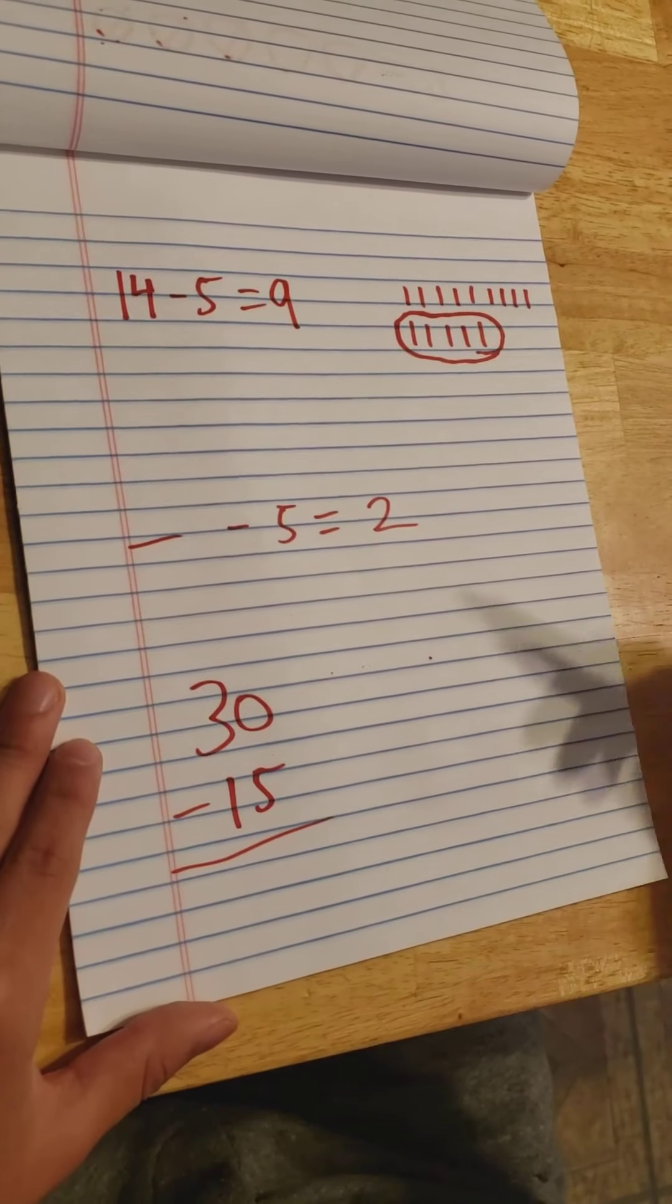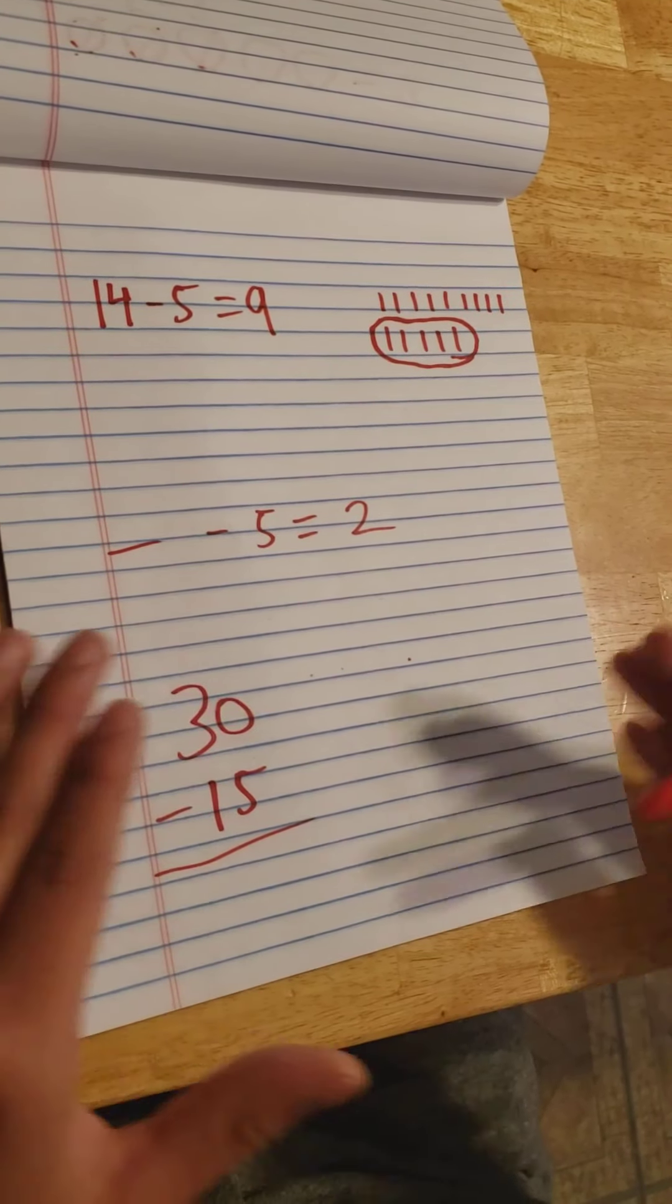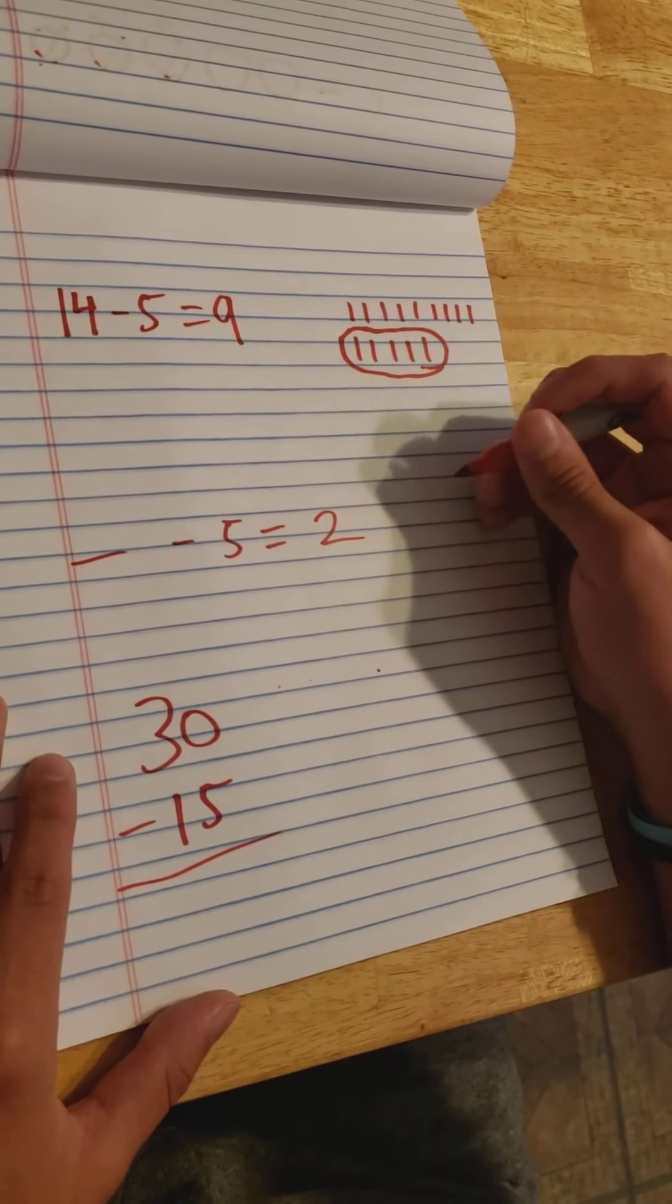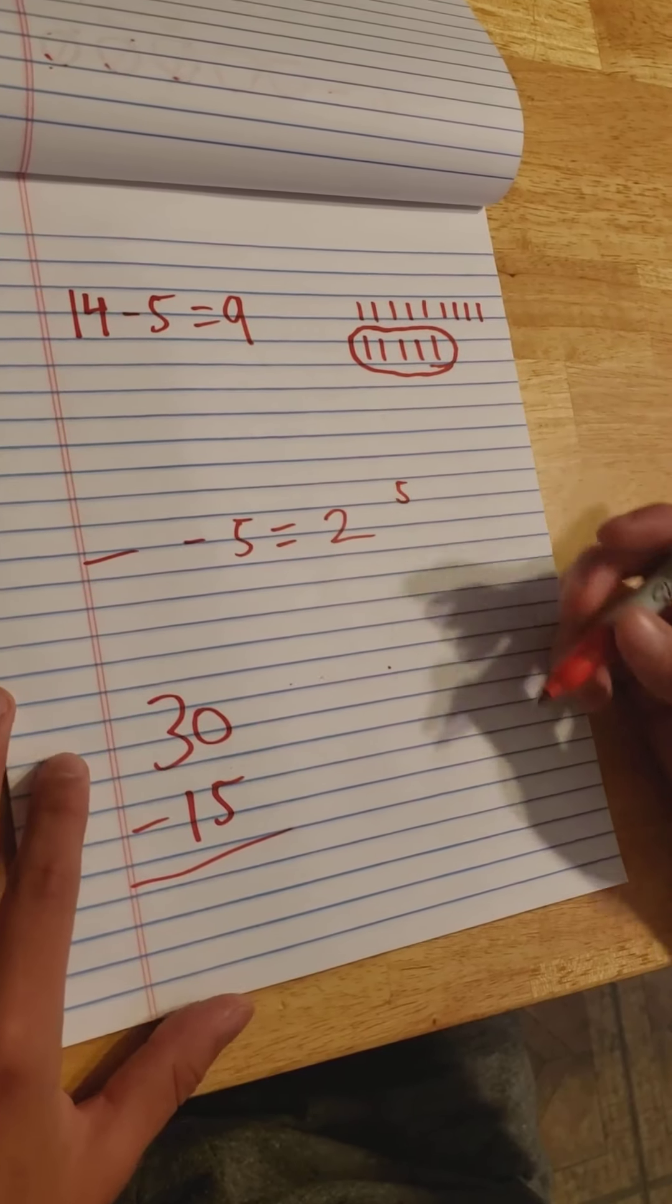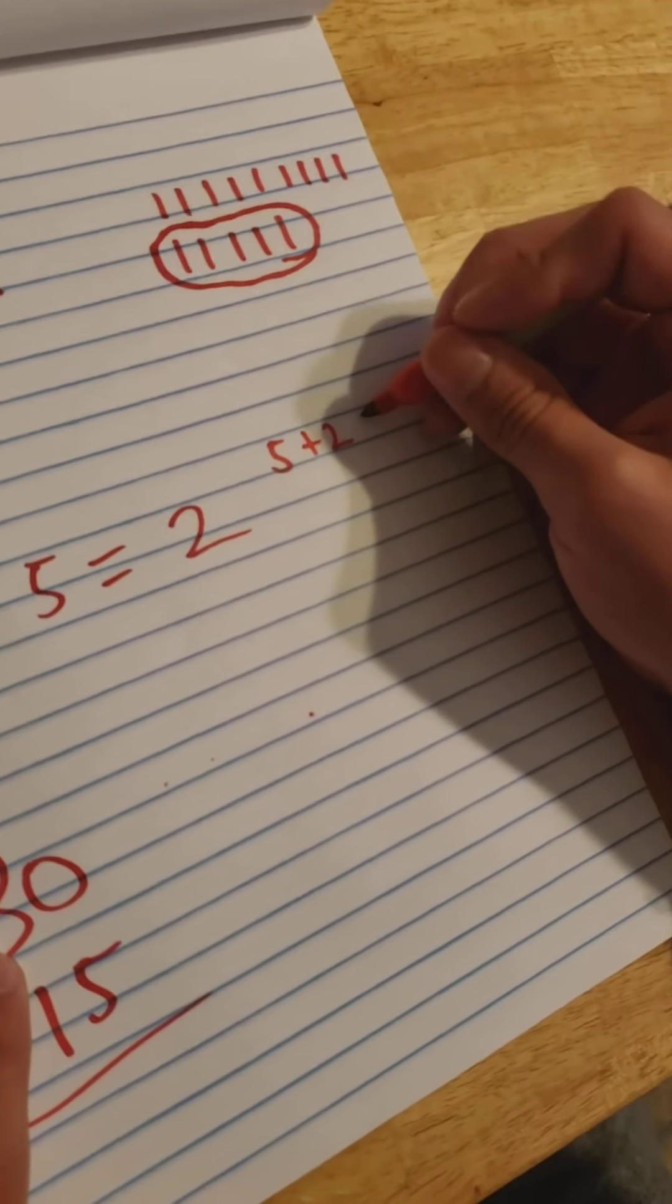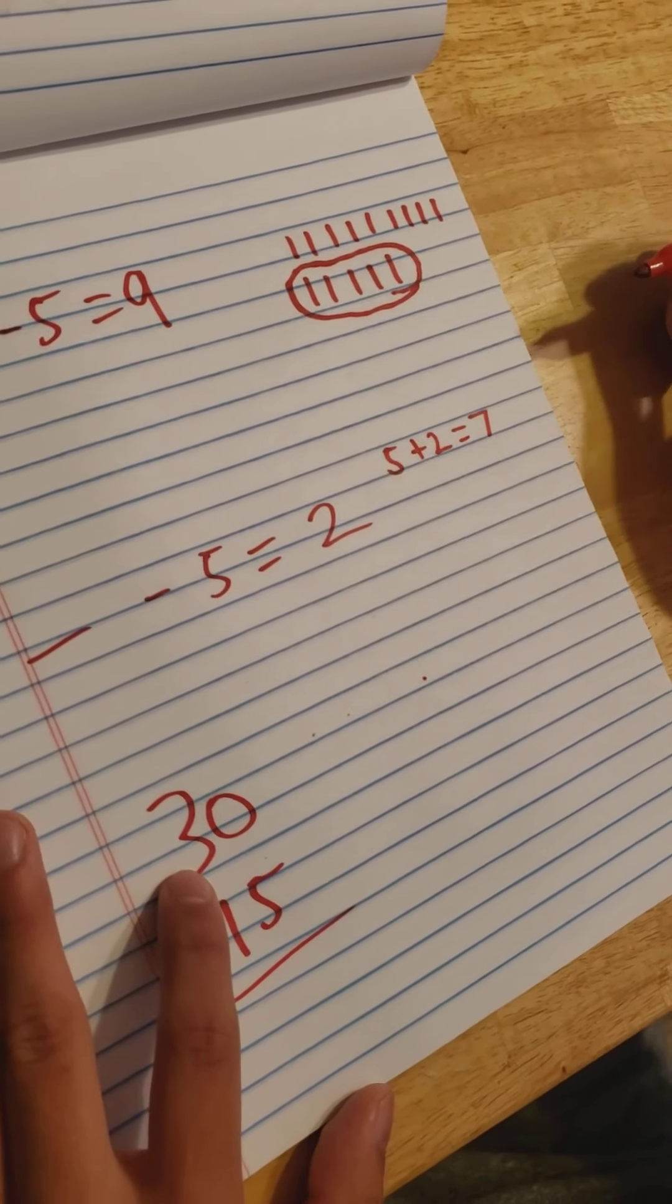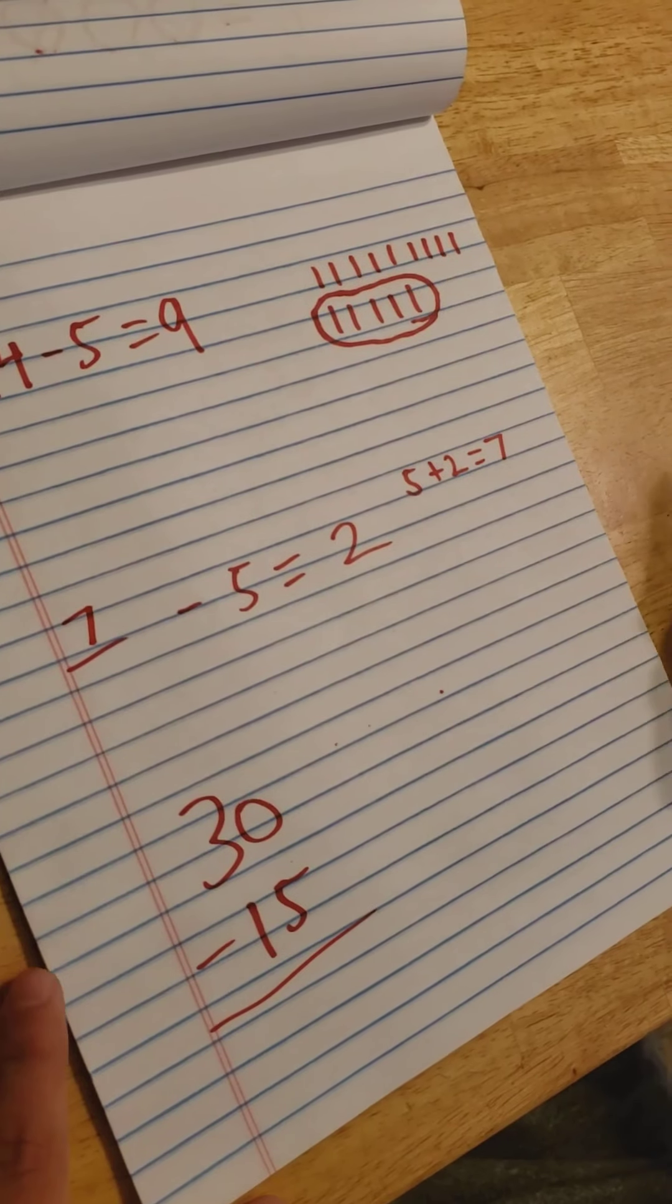Now we have a fill in the blank problem. What is blank minus 5 that equals 2? You can do all sorts of different tricks, you can guess and check, just keep plugging in numbers to see what gets us to 2. Here is a surefire way to get you straight to what you need to do. If you take 5 and you take the information that's given, we also have 2, what we can do in reverse is 5 plus 2, which equals 7. Then we know that since 5 plus 2 equals 7, that must mean 7 minus 5 is equal to 2.